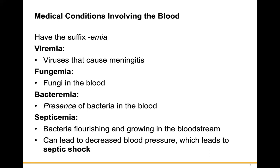Some medical conditions that involve the blood: viremia is a viral infection in the blood that can potentially cause meningitis; fungemia is fungal infection in the blood; bacteremia is the presence of bacteria in the blood; and septicemia is bacteria actively flourishing and growing in the bloodstream. This can lead to decreased blood pressure, resulting in a condition called septic shock.